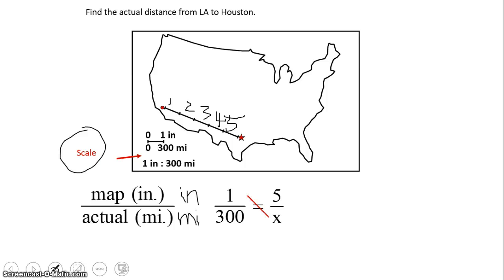And I'm simply again going to cross multiply. 1 times x is x. 300 times 5 is 1500. I do need to make sure I keep that equal sign in the middle because I am looking for x and I want to know what x is equal to. And so our x and our actual distance is 1500 miles.